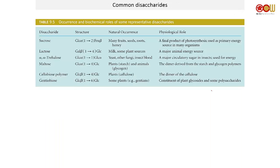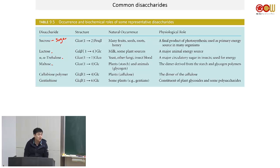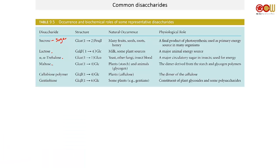Here is a list of common disaccharides. Sucrose is your tabletop sugar. Lactose we talked about. Trehalose is found in some yeast or fungi and is used as energy storage for some organisms. Maltose is the building block for making amylose — this is what you get when you heat up starch and degrade it. And then you have cellobiose and gentibiose.